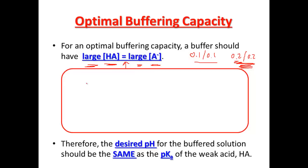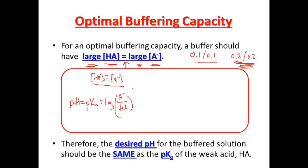Here's why. When HA is equal to A-, the ratio in Henderson-Hasselbalch — pH equals pKa plus log of the base A- over the acid — when those two are equal to each other, this ratio equals 1. And the log of 1 is 0. So therefore, buffers are their best when pH equals pKa.